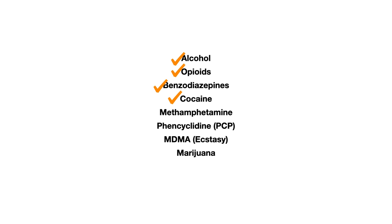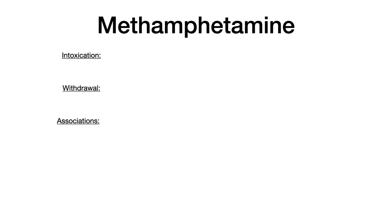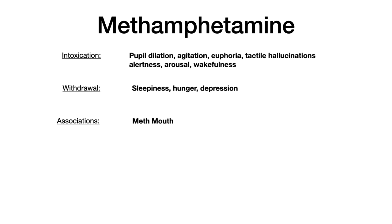Next, we're going to focus on a very similar stimulant illicit drug — methamphetamine. Because methamphetamine is also a stimulant working very similarly to cocaine, the intoxication and withdrawal states are pretty similar. For intoxication, you get sympathomimetic effects: pupil dilation, agitation, euphoria, hallucinations, arousal, alertness, and wakefulness. Consistent with the theme throughout this video, if intoxication is feeling supercharged, then withdrawal symptoms are the opposite: sleepiness, hunger, and depression. The intoxication and withdrawal states of stimulant drugs are very similar.